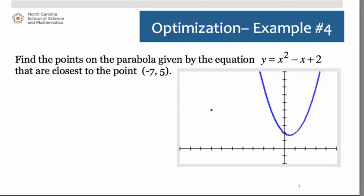Hi everyone, let's take a look at an optimization problem that is very much geometry related. We have here a parabola given by the equation y equals x squared minus x plus 2, and we're trying to find the points on that parabola that are going to be closest to the point negative 7 comma 5.